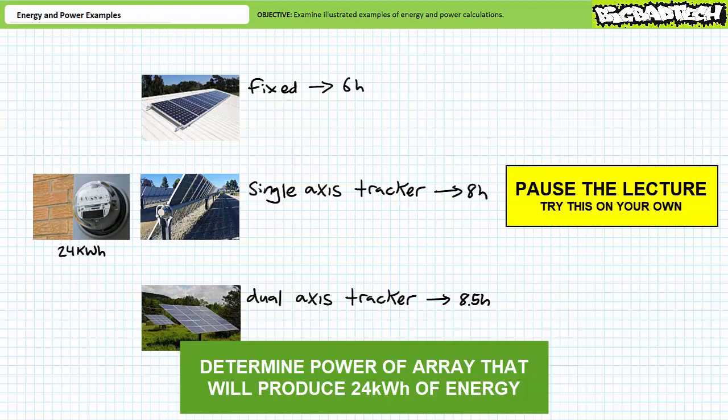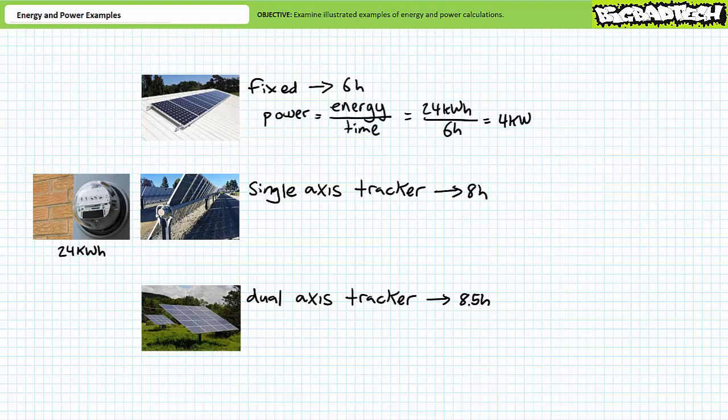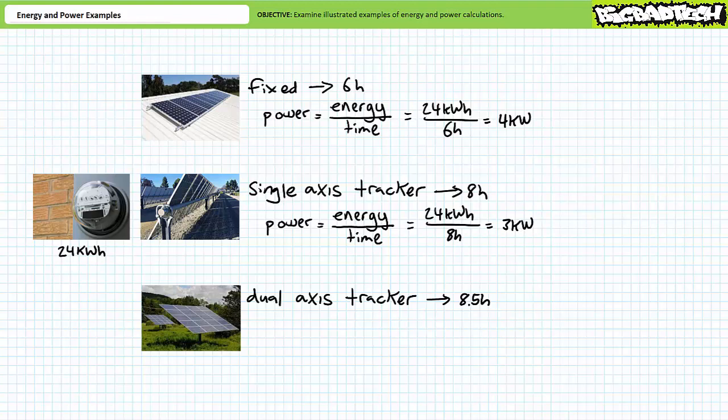By all means, pause the lecture and try this on your own. If energy is power times time, then power is energy over time. For the fixed stationary mount: 24 kilowatt hours over six hours demonstrates a 4,000 watt, or four kilowatt, solar array would provide the desired power rating. For the single axis tracker: 24 kilowatt hours over eight hours demonstrates a 3,000 watt, or three kilowatt, solar array. For the dual axis tracker: 24 kilowatt hours over 8.5 hours demonstrates a 2,823.5 watt, or roughly 2.8 kilowatt, solar array.